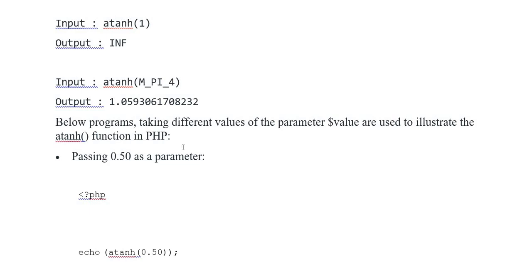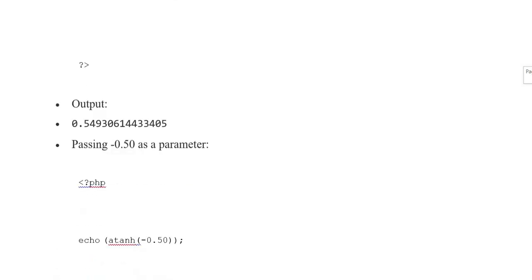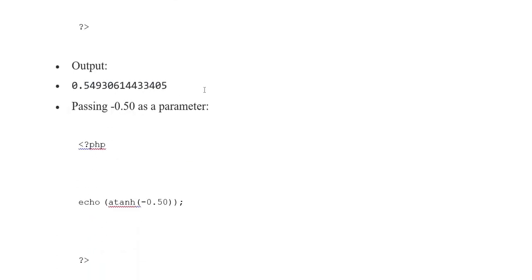Passing 0.50 as a parameter: PHP opening and closing tags, echo atanh(0.50), output is 0.5493061443405 represented here.